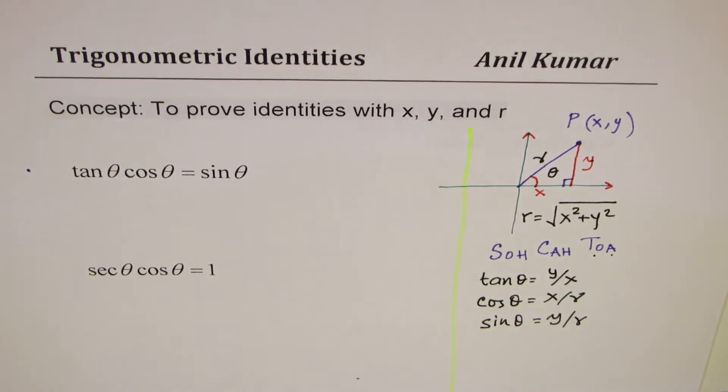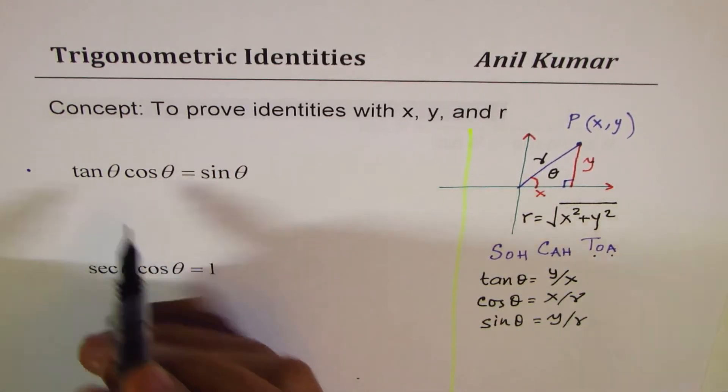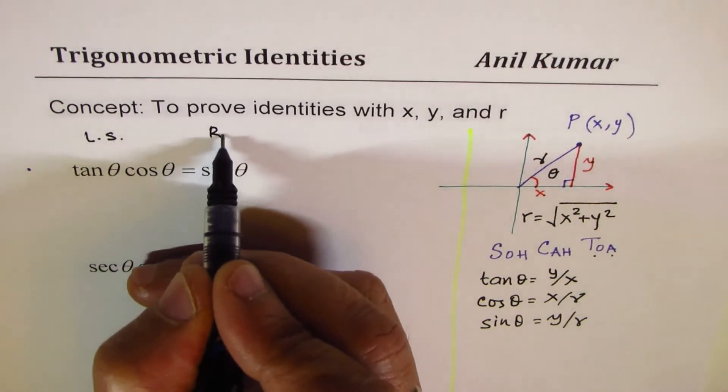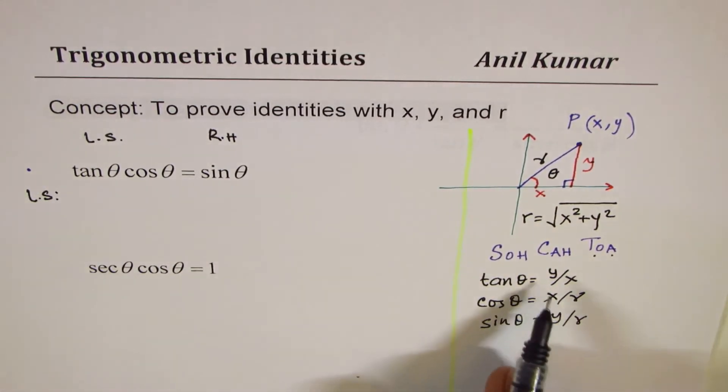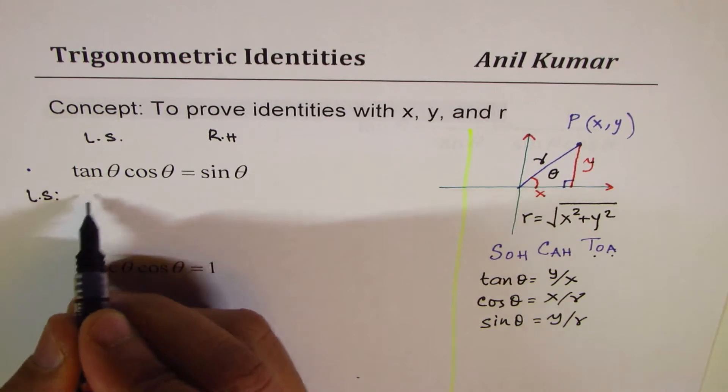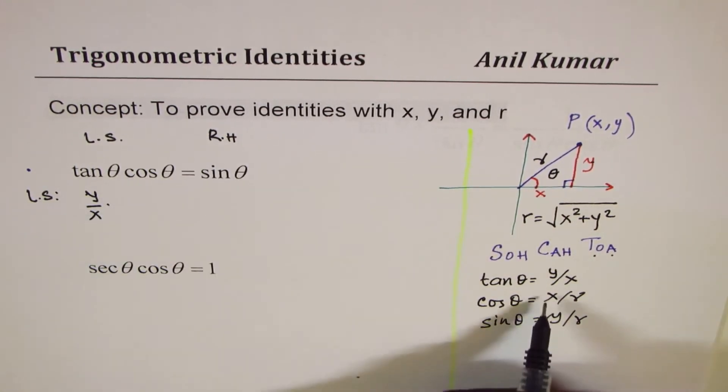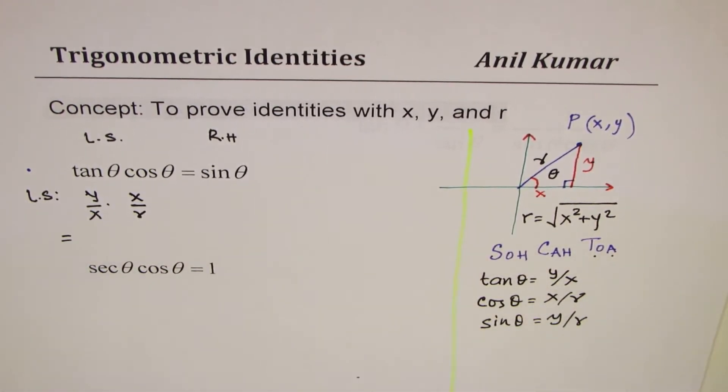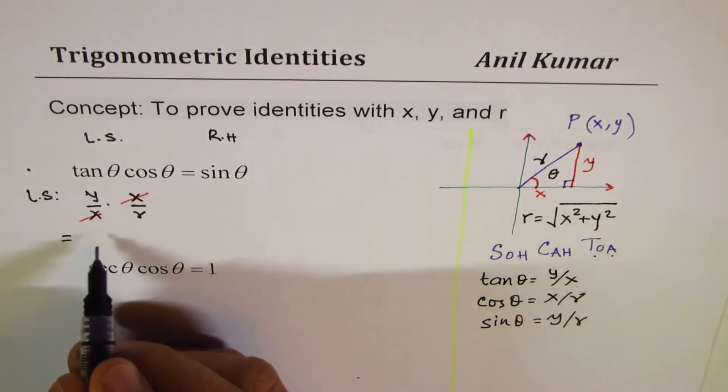So, we will just substitute. Now, when we prove identities, we can start with the left side, which is more complicated. Starting with the left side, tan theta can be written as y over x. So, I am replacing tan theta by y over x times cos theta, x over r. Now, here, as you can see, x and x cancel. So, we are left with y over r.